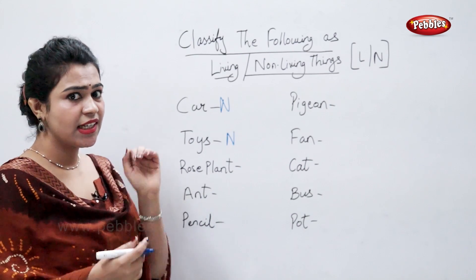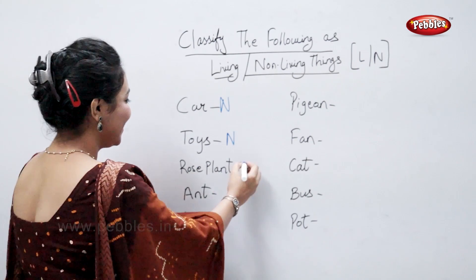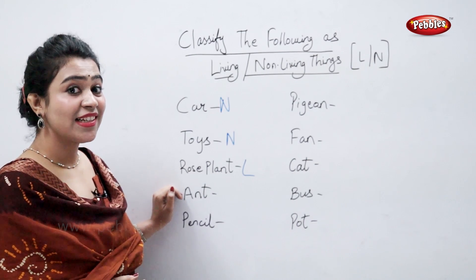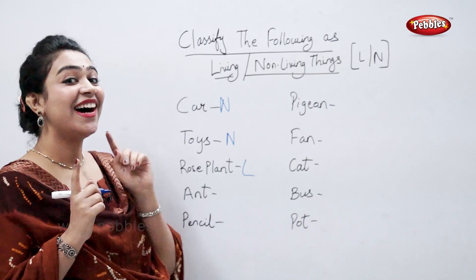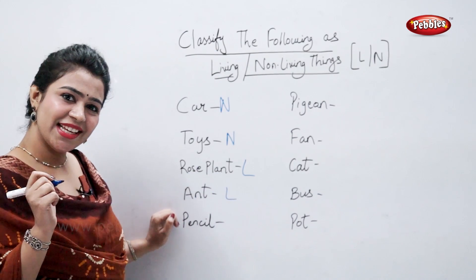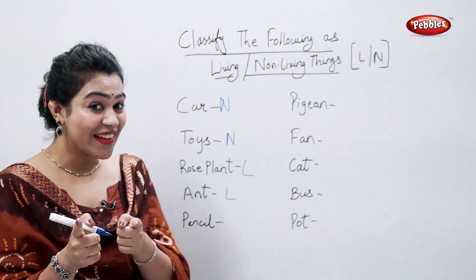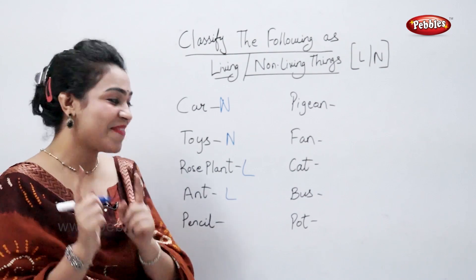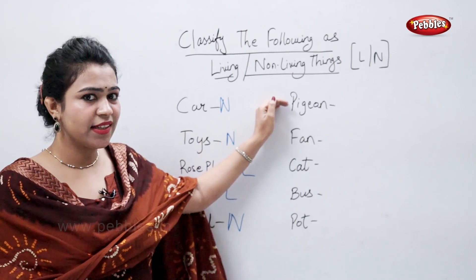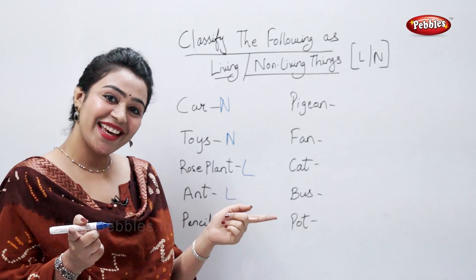Rose plant is a living thing. Ant is a living thing. Pencil is a non-living thing. Pigeon. Pigeon is a living thing.